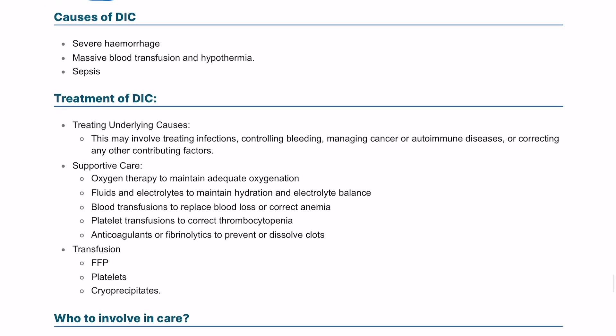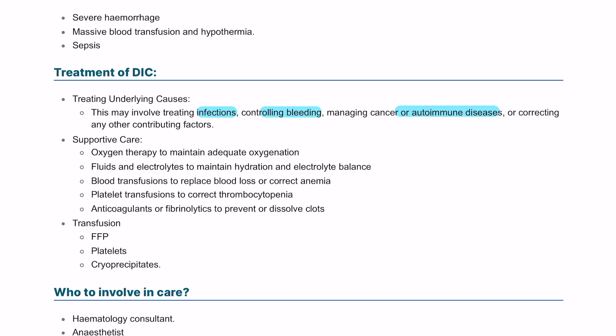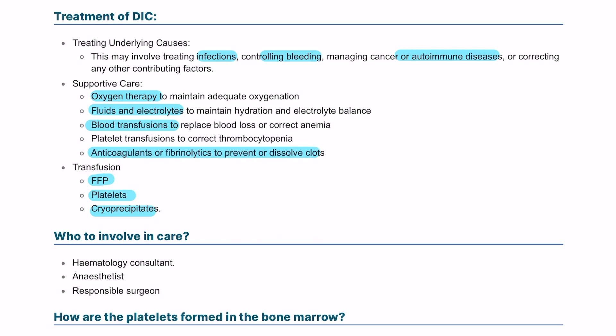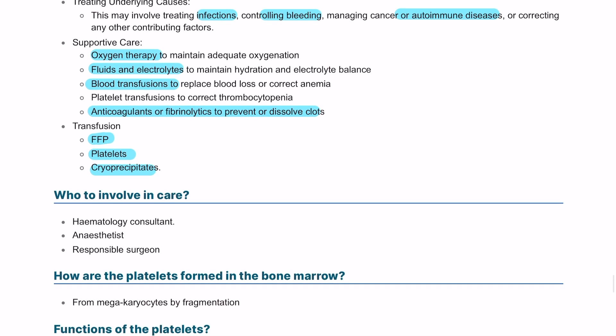First, we need to find the cause and treat it, whether it's infection, sepsis, massive bleeding, massive blood transfusion, or autoimmune disease. The treatment is supportive: the patient is losing blood and will be hypoxic, so we need to give them oxygen and fluid, and arrange for transfusion including fresh frozen plasma, platelets, cryoprecipitate, or blood transfusion. We can give them anticoagulant or fibrinolytics to prevent or dissolve clots.